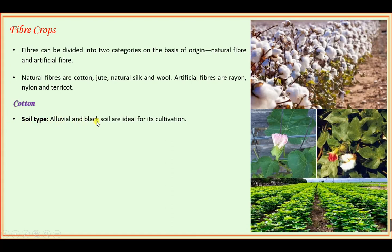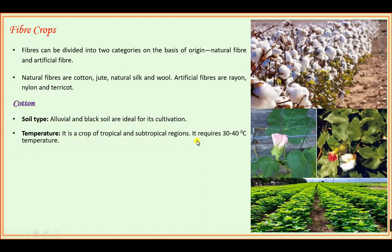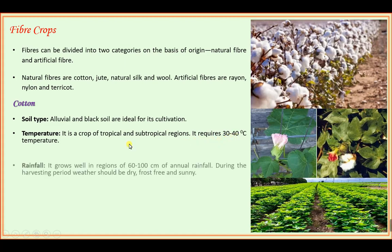Alluvial and black soil are ideal for cotton cultivation. Temperature: it is a crop of tropical and subtropical regions, requiring 30 to 40 degrees Celsius. Rainfall: it grows well in regions with 60 to 100 centimeters of annual rainfall.